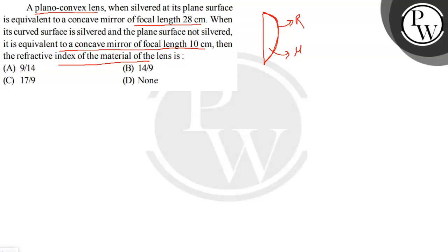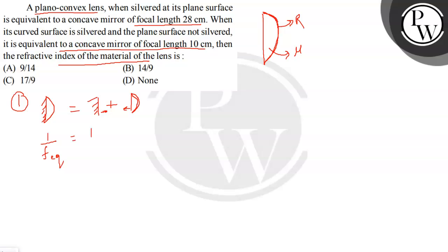Case 1: the plane surface is silvered. The silvered plane surface acts like a mirror. To find the equivalent focal length, we use the formula: 1/f_equivalent = 1/f_mirror − 2/f_lens.